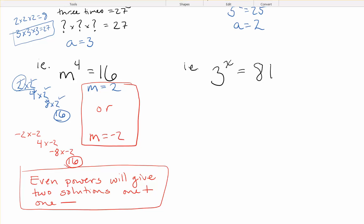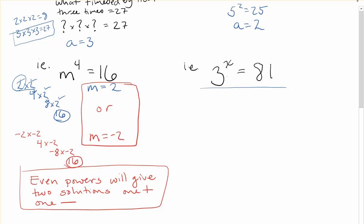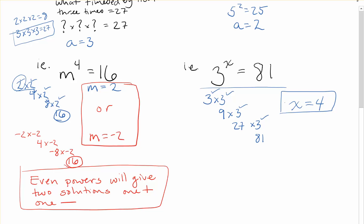Looking at the fourth example: 3 to the power of x equals 81. Using trial and error: 3 × 3 = 9, × 3 = 27, × 3 = 81. Counting back: one, two, three, four threes used, so x = 4. Make sure you write out what the variable is equal to. No need to worry about positive or negative here since we're finding the power, not the base — the even power rule applies when finding the base.